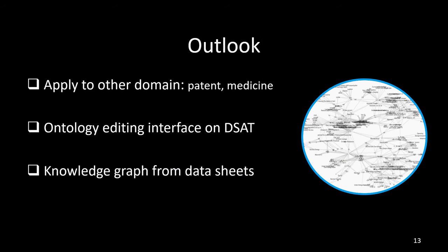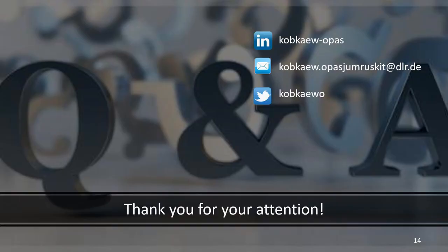Our next step is to apply our implementation to other use cases, for example with patent or medical documents. Currently, the ontology is updated without a graphical user interface, meaning the correction of the ontology still lacks an intuitive approach. Finally, when we have trustworthy data extraction, we can use the extracted information to create a knowledge graph for better search. Thank you for your attention — if you have any questions, feel free to ask or drop me an email at the provided address.